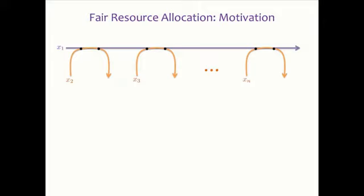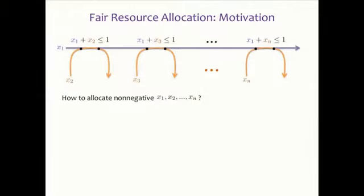Let me start with one classical example very often used in courses on communication networks. The setting is: we have one very long path that uses N minus one capacitated links, and N minus one short paths shown in orange that use only one capacitated link each, and each link has unit capacity. The question we want to ask is how do we allocate flows in this network — how do we allocate rates to each route?